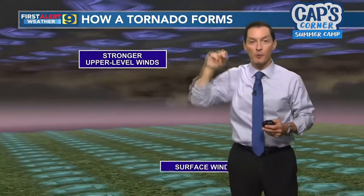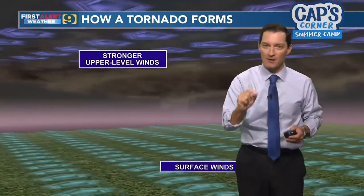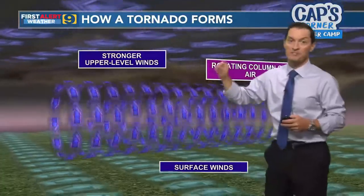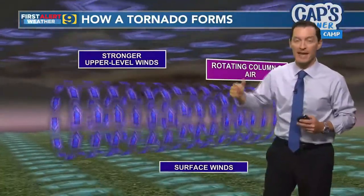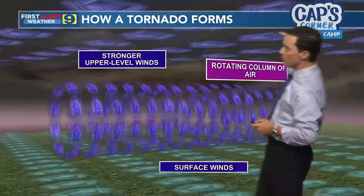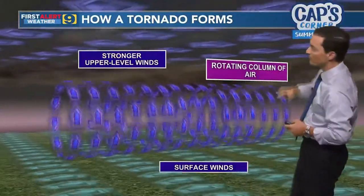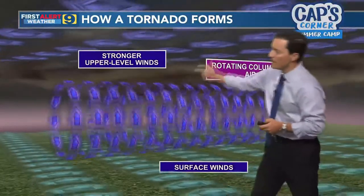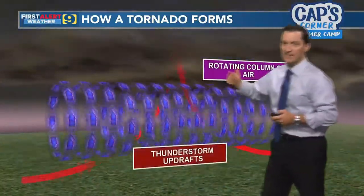That is what we call wind shear. We talked about wind shear a little bit in our hurricane lesson — hurricanes don't like it, but wind shear is necessary for tornadoes. With the wind blowing faster up above than it is down at ground level, we start to get a column of air that is rotating.